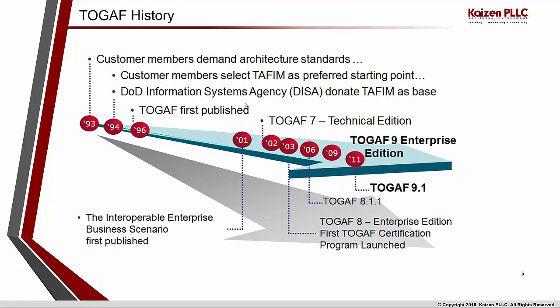Let's go and look at how TOGAF came into existence — what is its history. Going back in time, during the early 1990s there was a demand from customer members that they needed some kind of an architecture standard. During that time, the Department of Defense was working on a standard known as TAFIM, which stands for Technical Architecture Framework for Information Management, and they had it from the late 1980s. They gave this standard as a starting point.